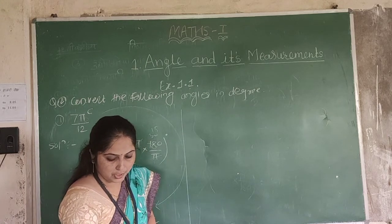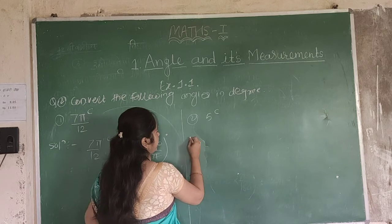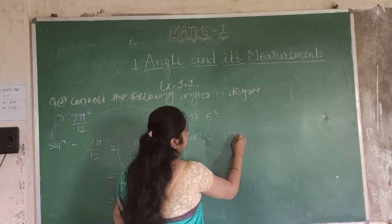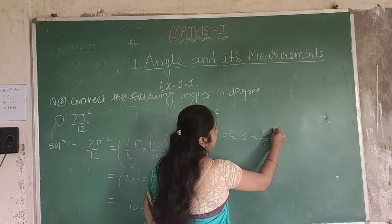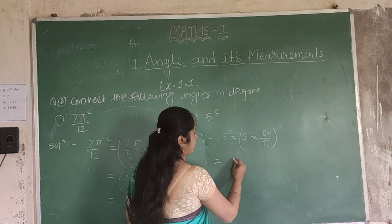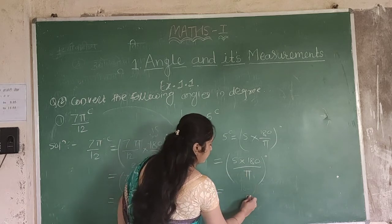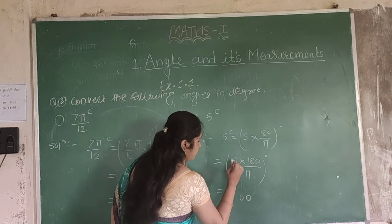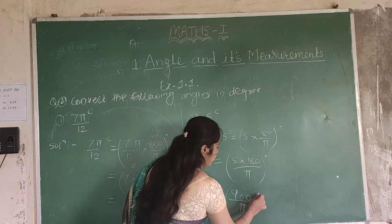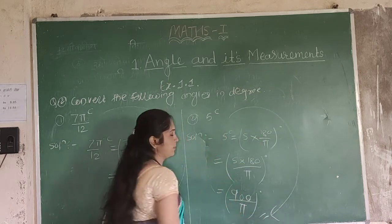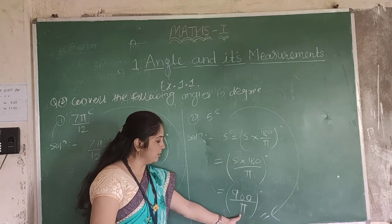Next question: 5 radians. Convert 5 radians into degree measure. Multiply by 180 divided by pi: 5 into 180 divided by pi gives 900 divided by pi degrees. So 5 radians equals 900 by pi degrees.